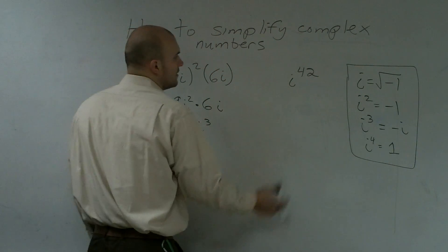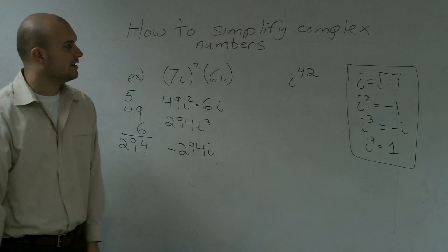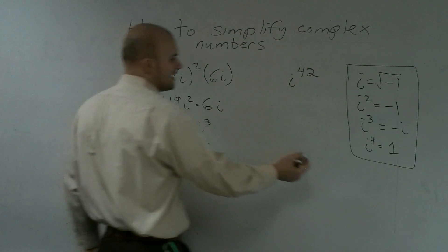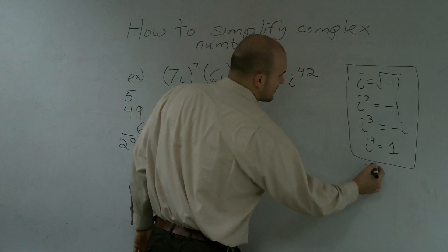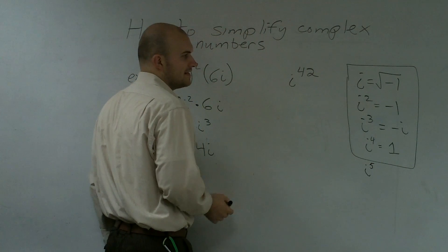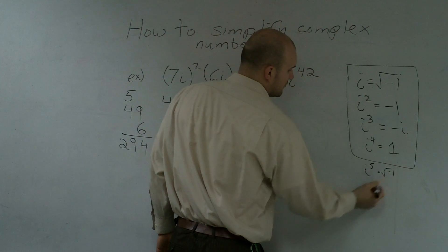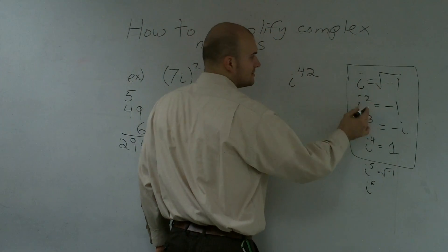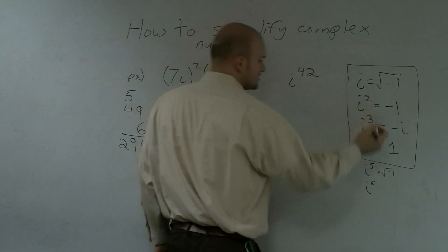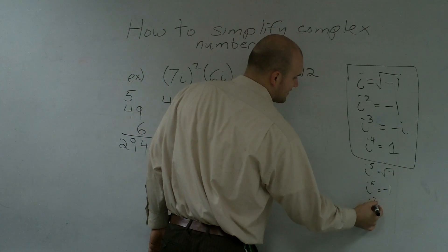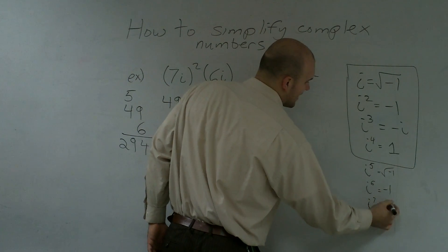So now, how the heck am I supposed to know what i to the 42nd is going to be? Well, if I say i to the 5th, which is going to follow along again in that pattern? i to the 5th is going to equal negative 1. i to the 6th is going to be a negative 1. i to the 7th is going to equal negative i.